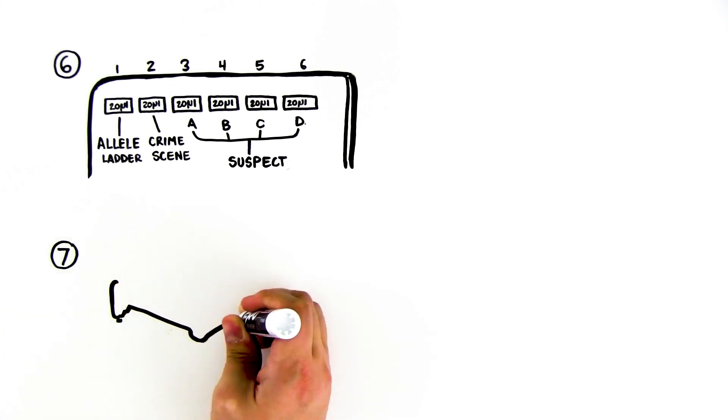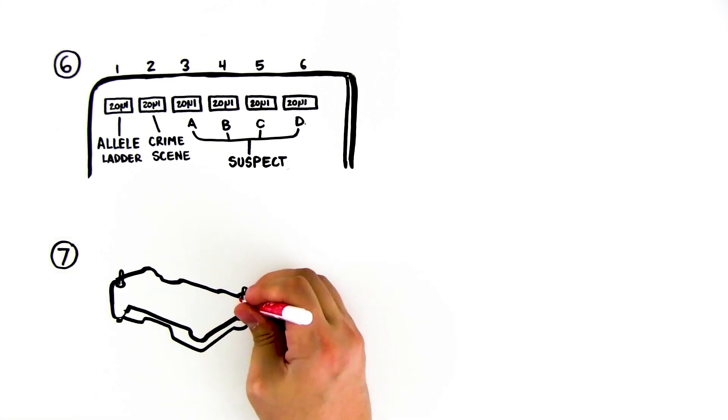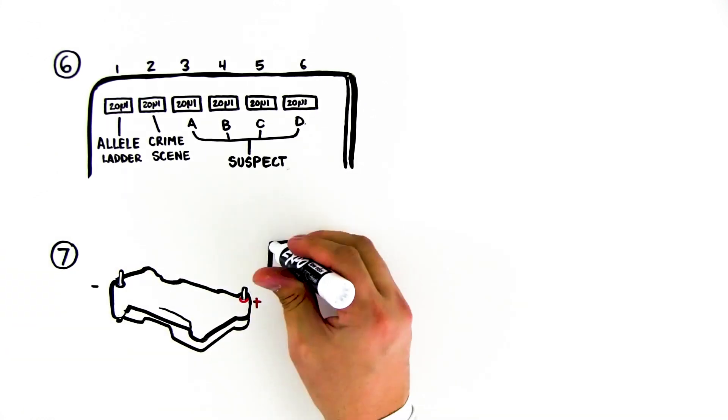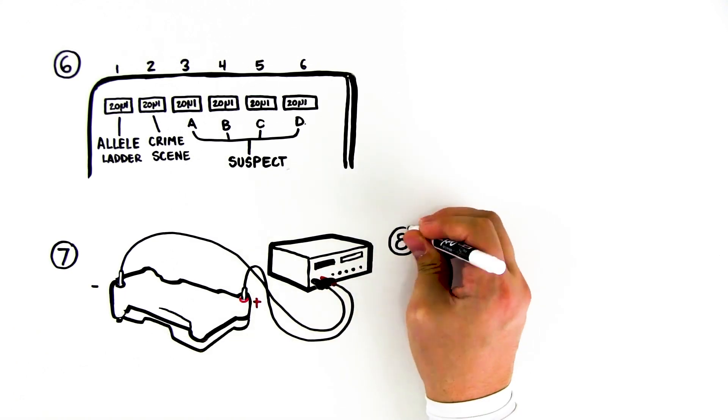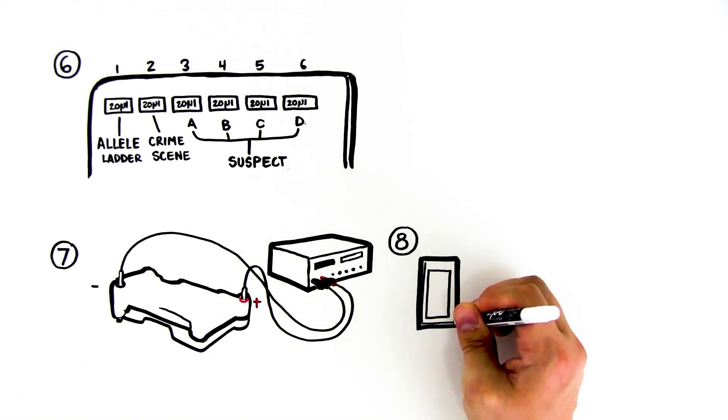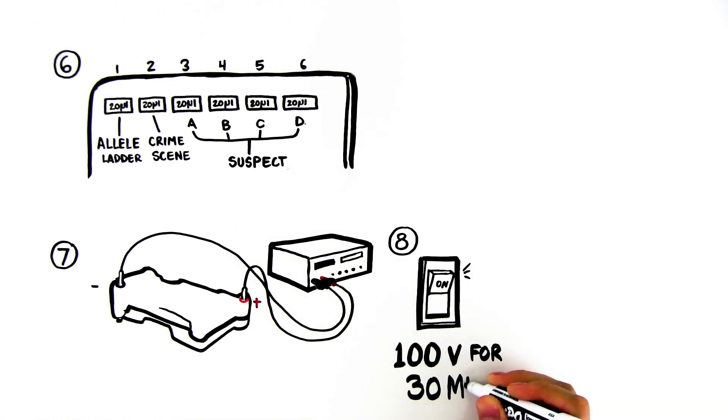Step 7: Secure the lid on the gel box. The lid will attach to the base in only one orientation, red to red and black to black. Connect the electrical leads to the power supply. Step 8: Turn on the power supply and electrophoresis your samples at 100 volts for 30 minutes.